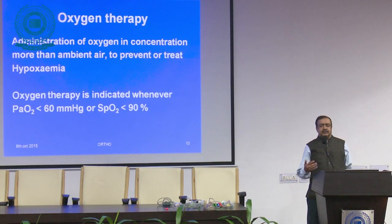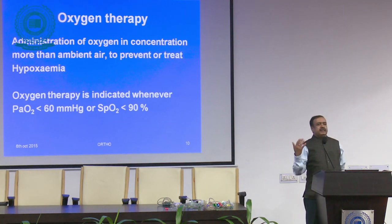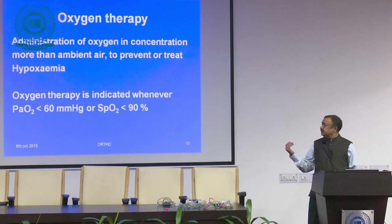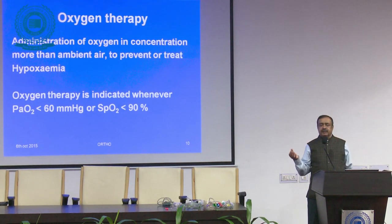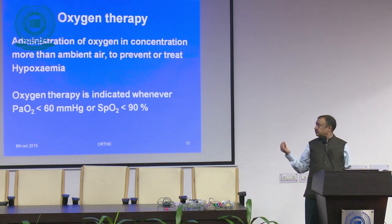Oxygen therapy is defined as giving oxygen at more than 21% — more than ambient air. Clinically, we give it when a patient appears cyanotic, but based on evidence, the parameters are: PaO2 less than 60 mmHg on blood gases, or oxygen saturation on pulse oximeter less than 90%. Those are the clinical indications.